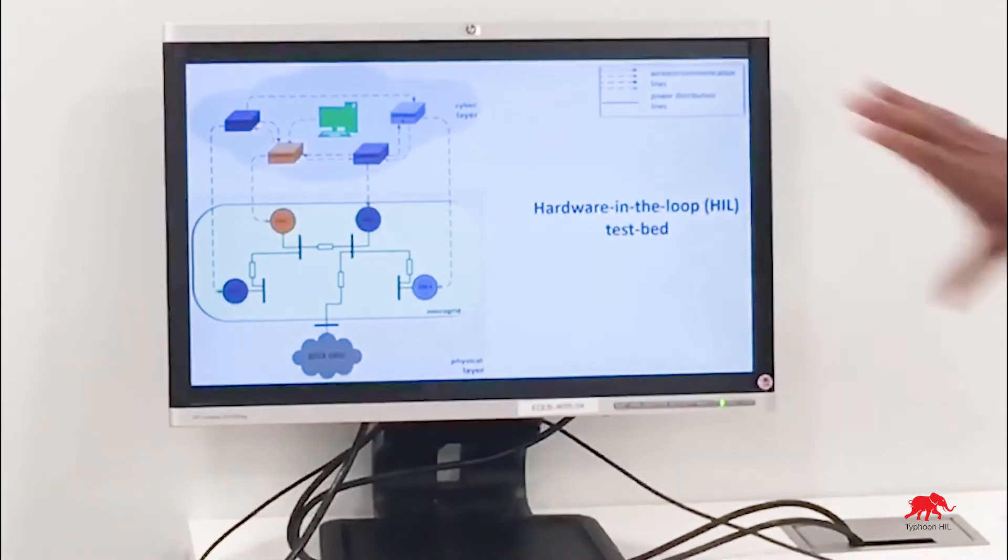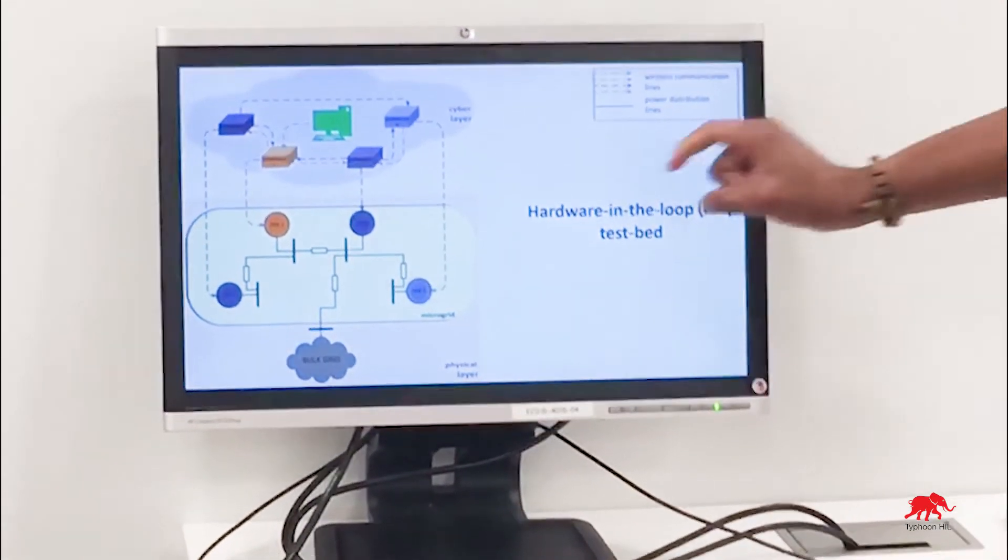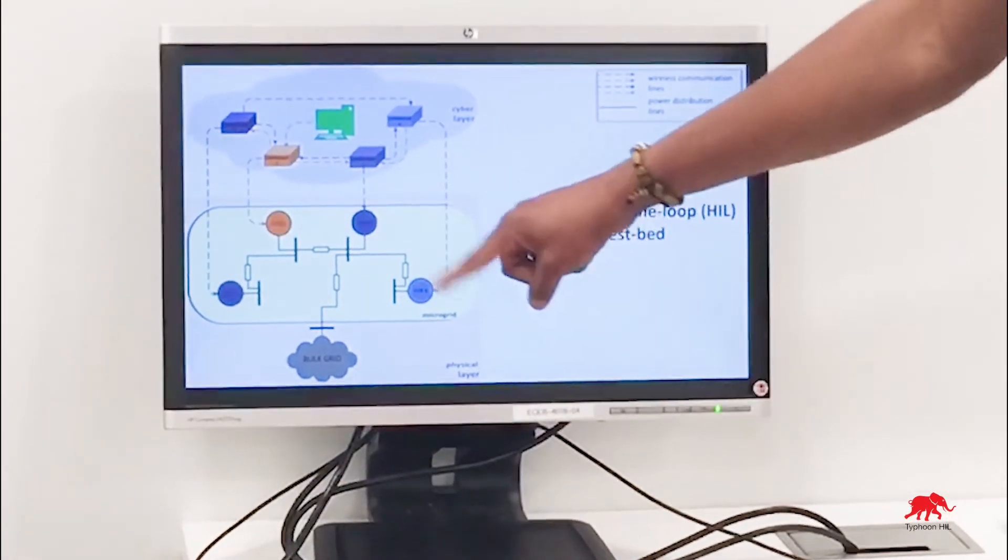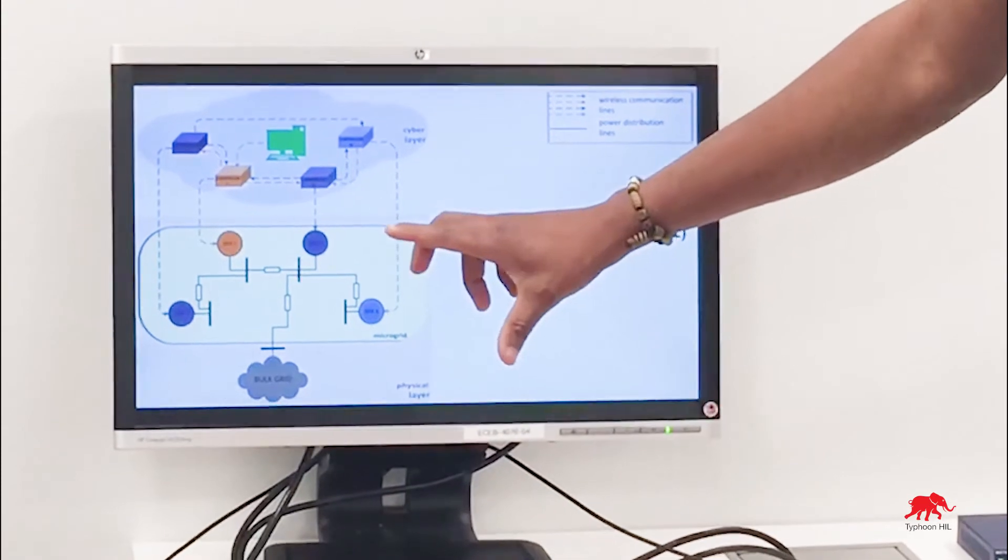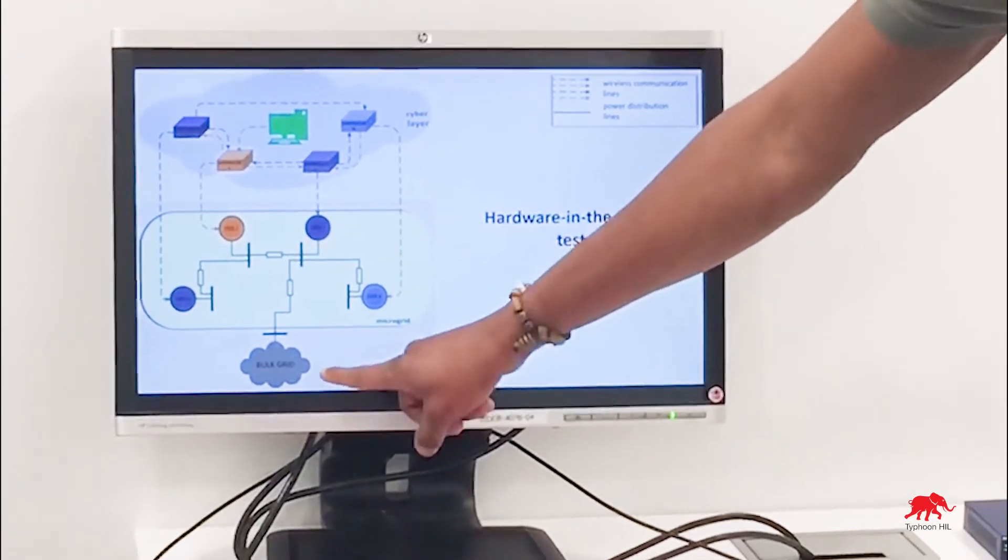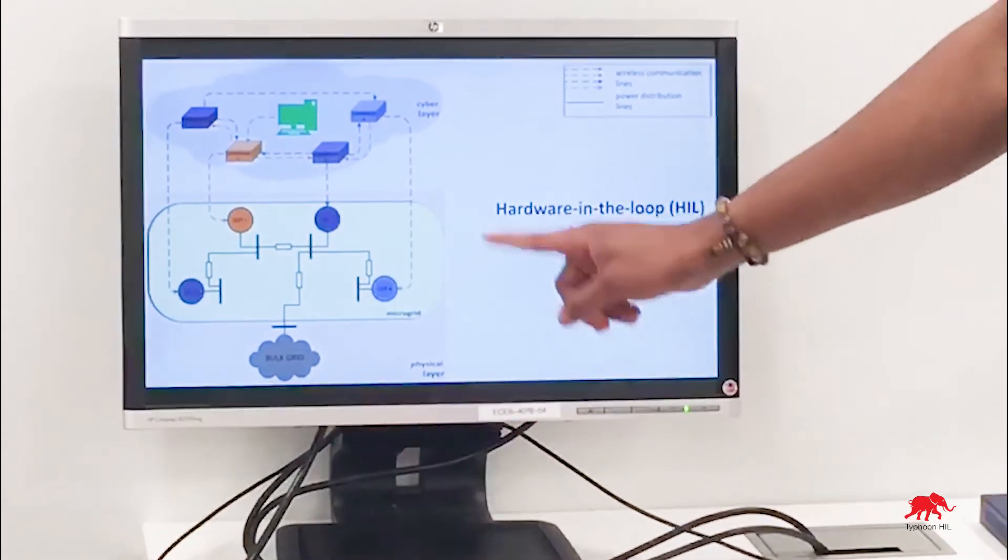The goal of this testbed is to control the power outputs of the distributed energy resources, the DERs, so that the power exchange between the microgrid and the bulk grid tracks a given regulation signal.